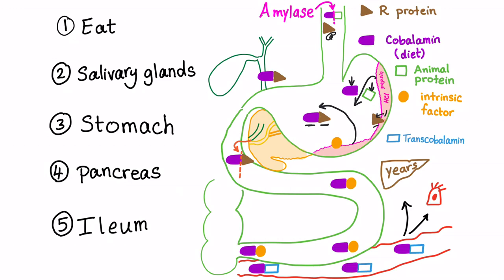R protein can be salivary, can be gastric, and as we will know, can be biliary. Anyways, it's an R protein. It serves the same function to bind to vitamin B12 and protect it from the gastric acid.